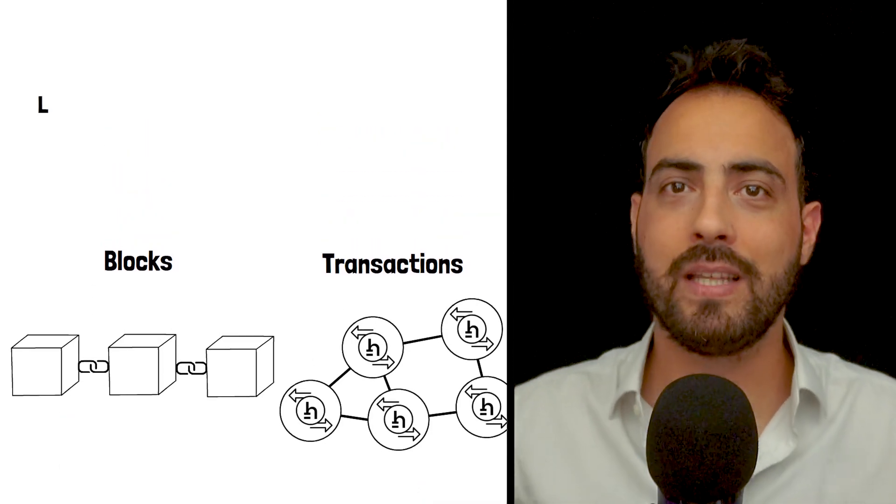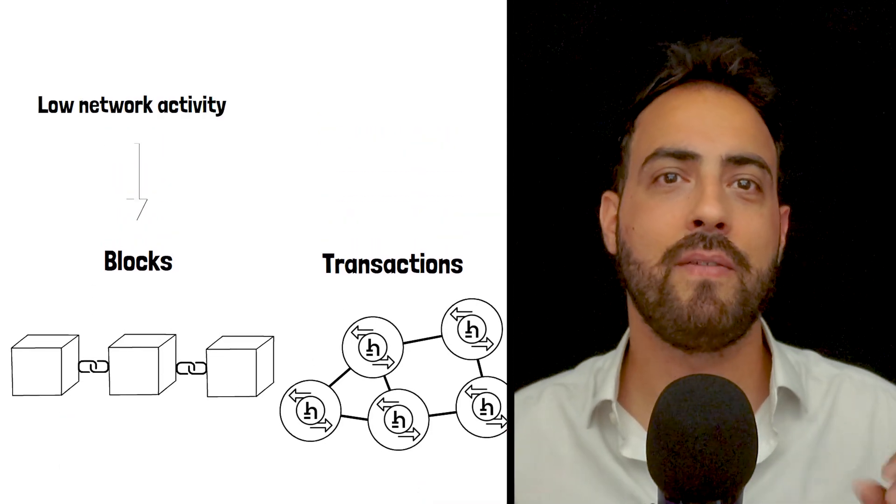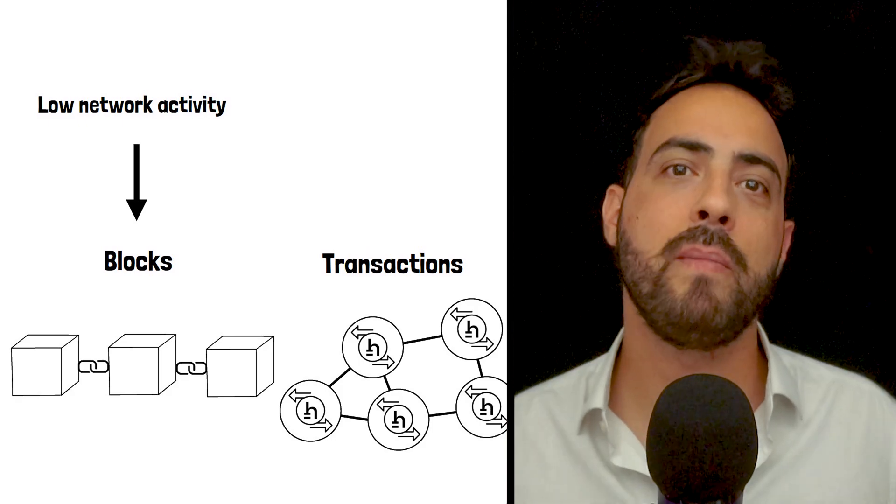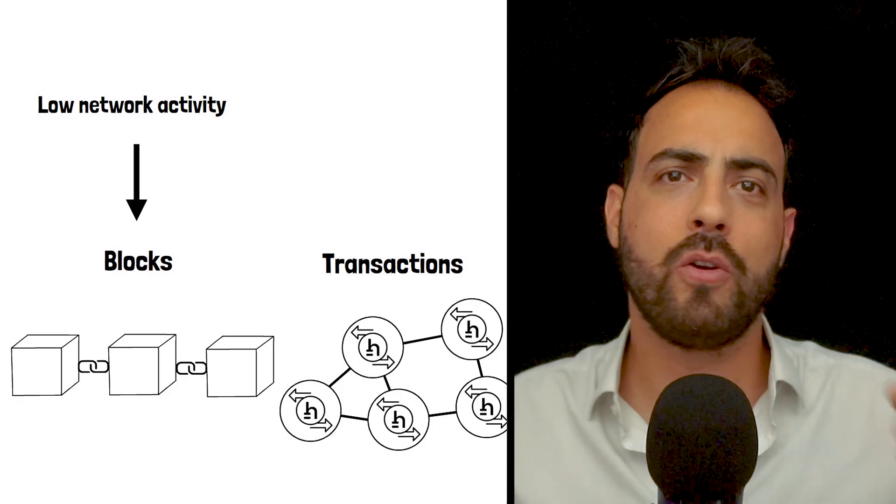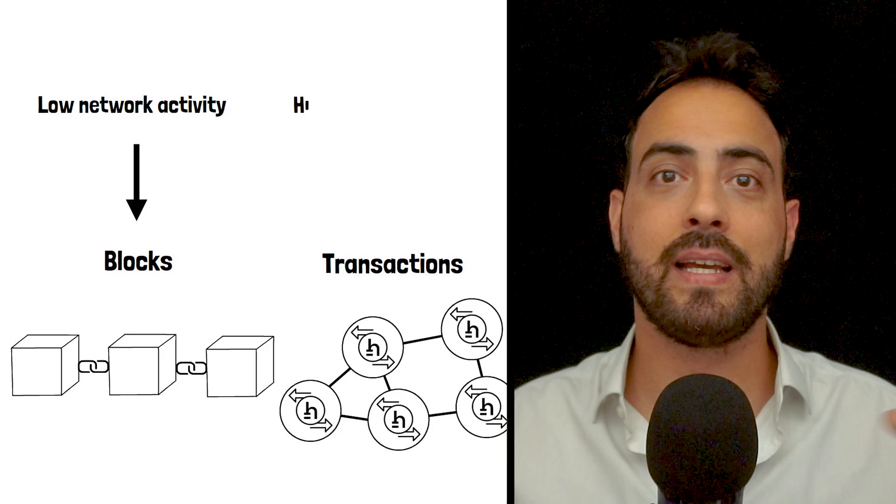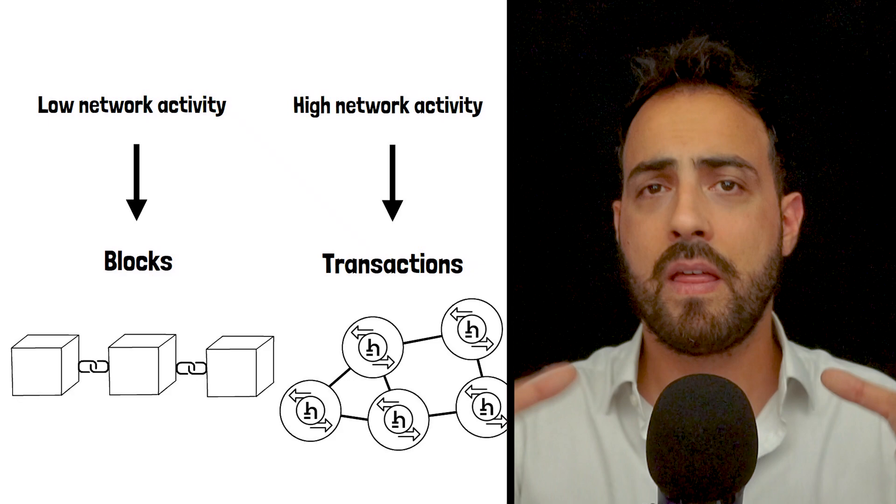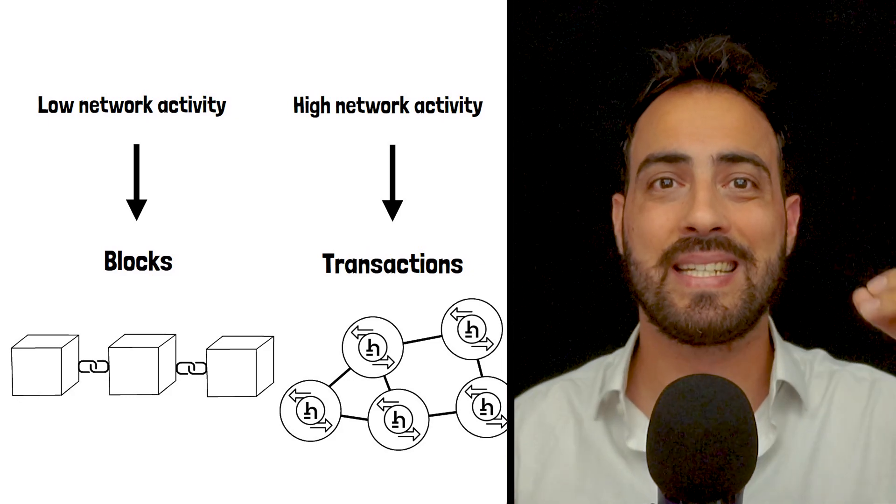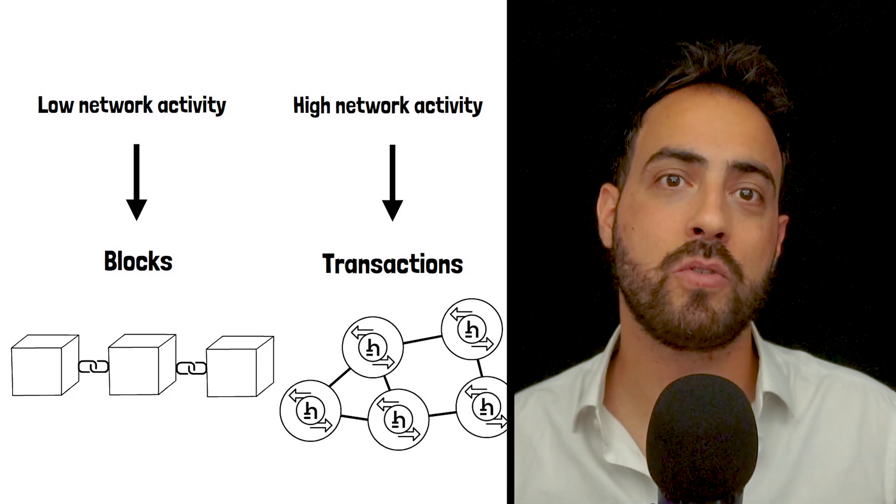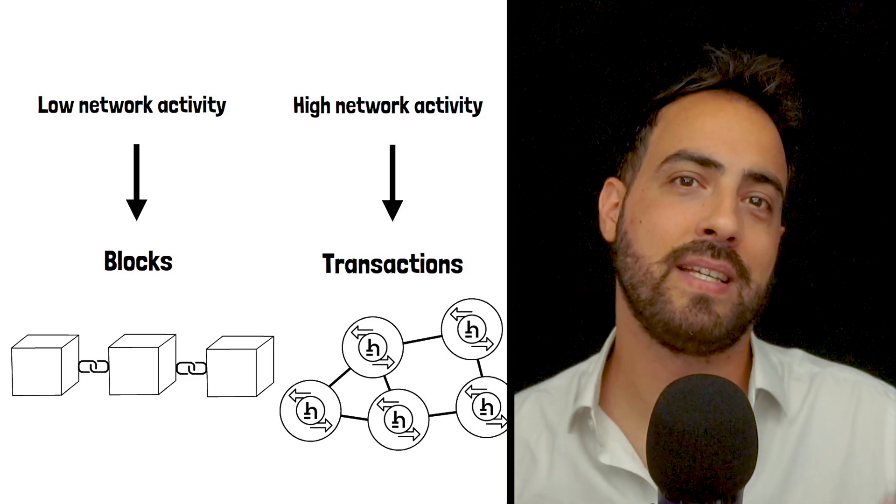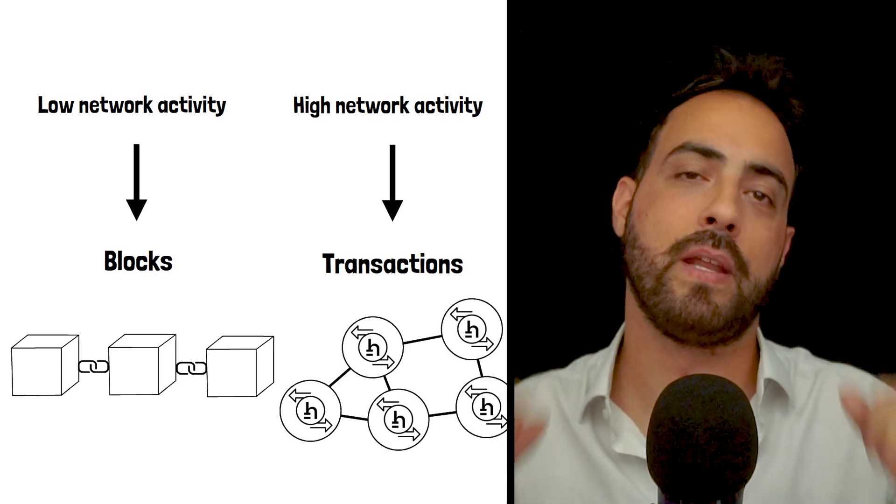In times of low activity, blocks do most of the heavy lifting for security and confirmation. It's similar to how Bitcoin operates. But when network activity increases, the higher the number of new transactions, the faster the transactions are confirmed. This approach means Hathor can scale to handle massive transaction volumes when needed without sacrificing security during low volume periods.